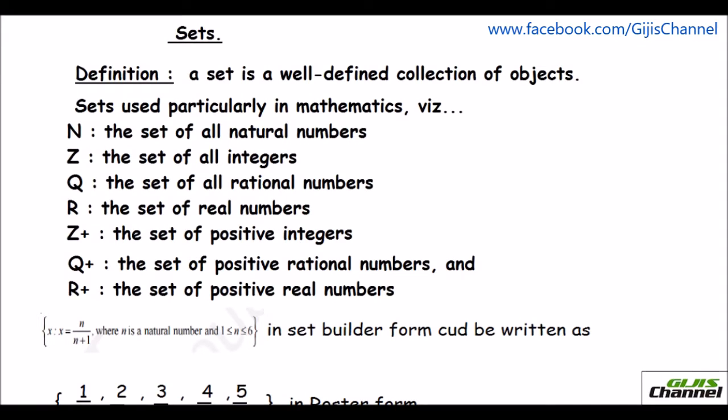Hello everybody, this is Vasavi from Atom. Today's topic is sets. So let us learn a few basic things about sets. By definition, a set is a well-defined collection of objects. The data shouldn't be vague. It should be clearly stated and they should have some relation in those data.